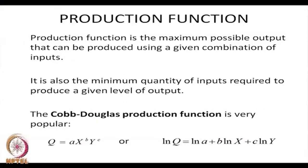To start with, we discuss about production function. By production function we mean the amount of products produced because of certain inputs such as material, labour, capital and so forth. We define production function as the maximum possible output that can be produced using a given combination of inputs. It is also the minimum quantity of inputs required to produce a given level of output. Basically it maps or defines a relationship between the inputs used and the outputs produced.